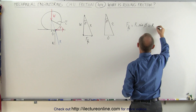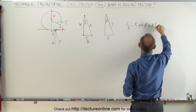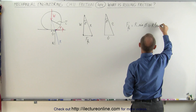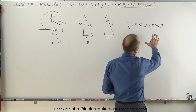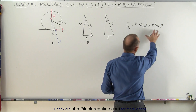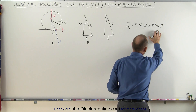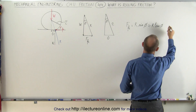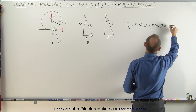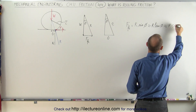For small angles, the sine of phi is approximately equal to the tangent of phi, which is approximately equal to phi itself. So we can say that the friction force is approximately equal to R times phi.